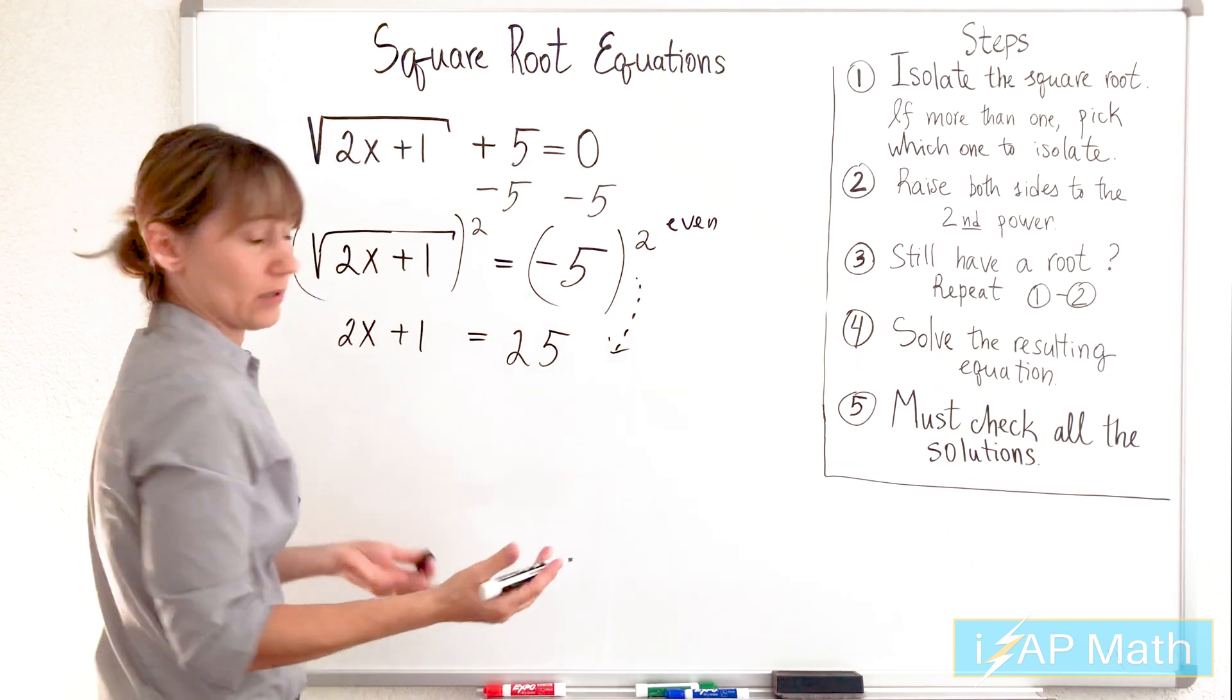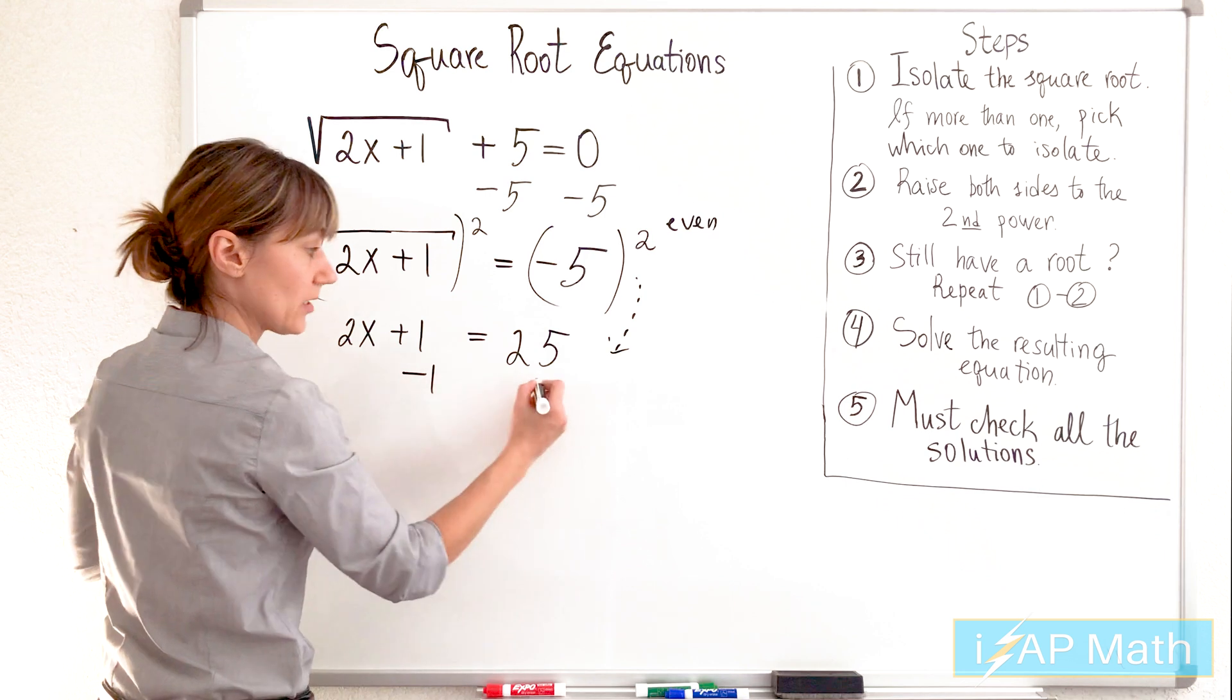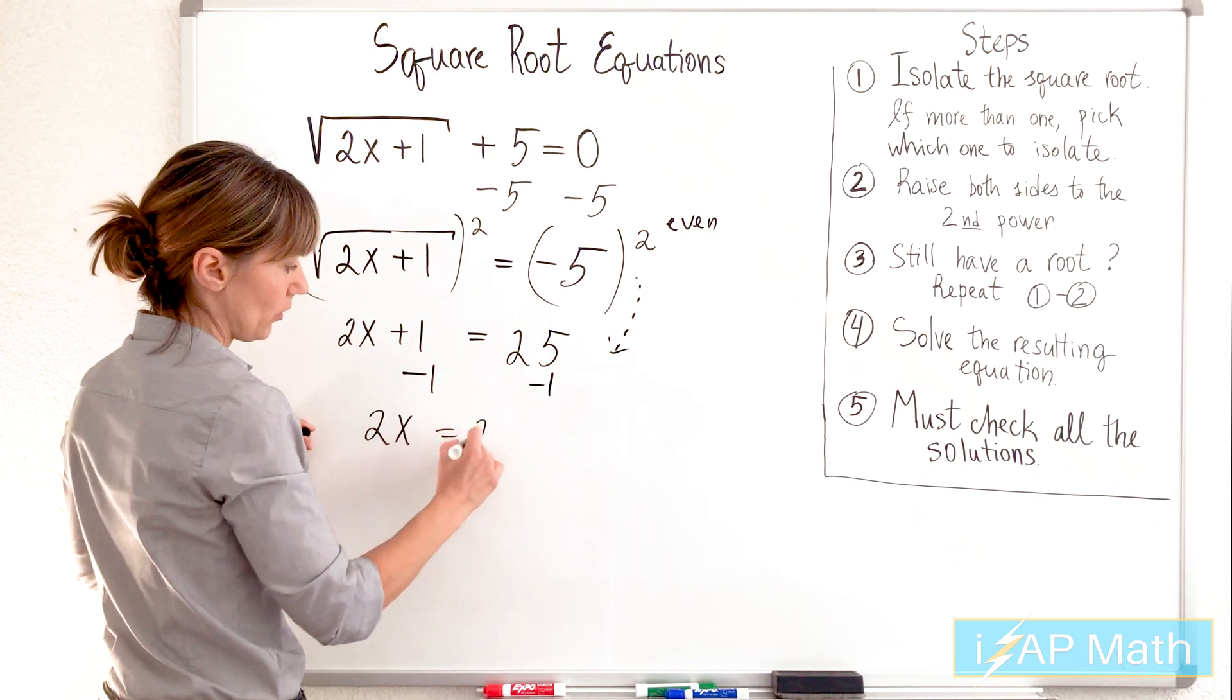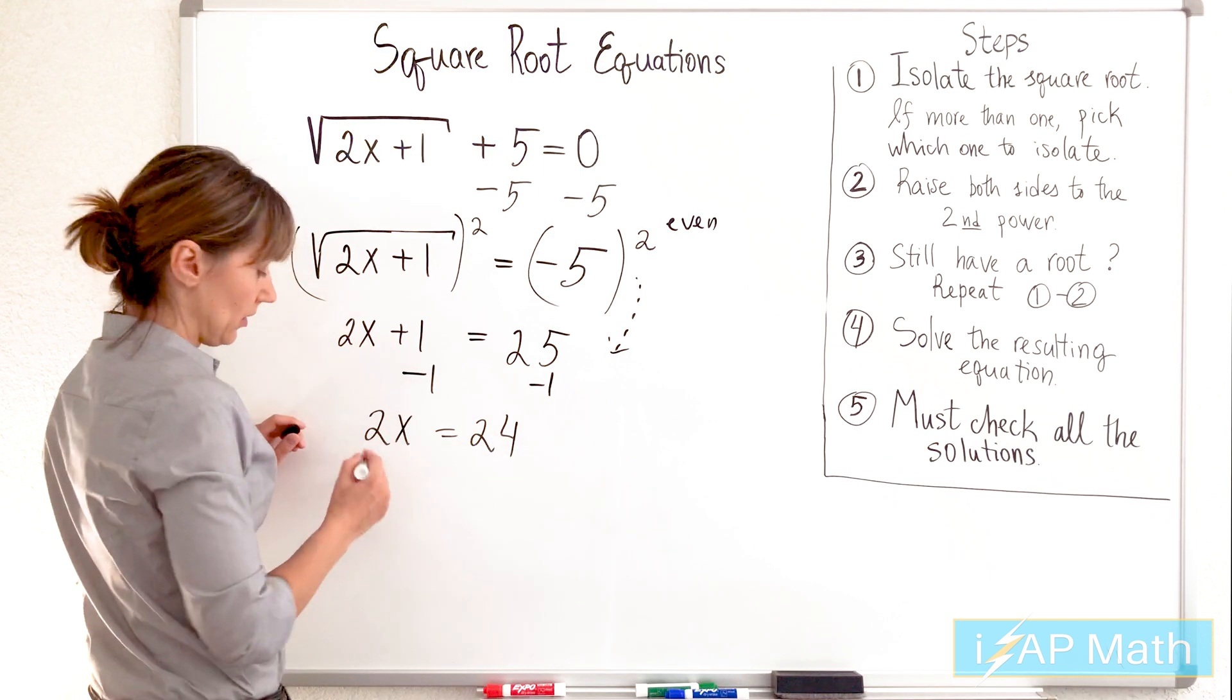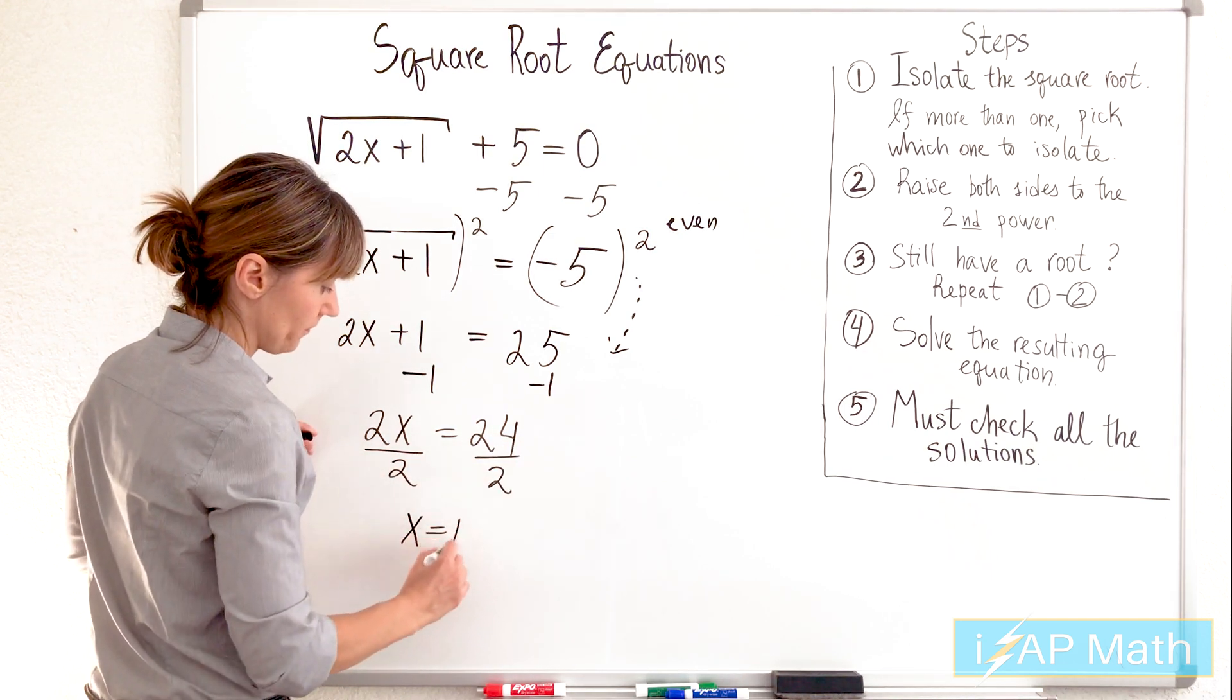I made the equation. Let's go and solve it. We're still following the steps. Subtracting 1 from both sides, we have 2x equals 24. Dividing both sides by 2, x equals 12.